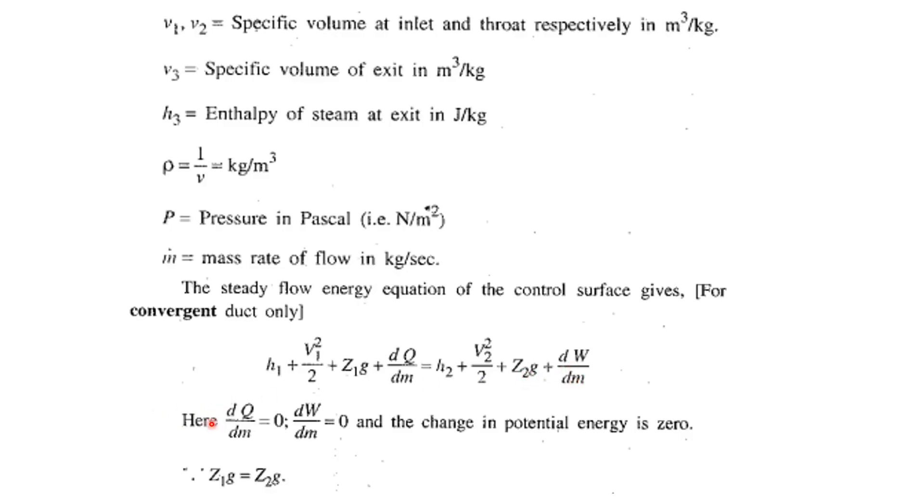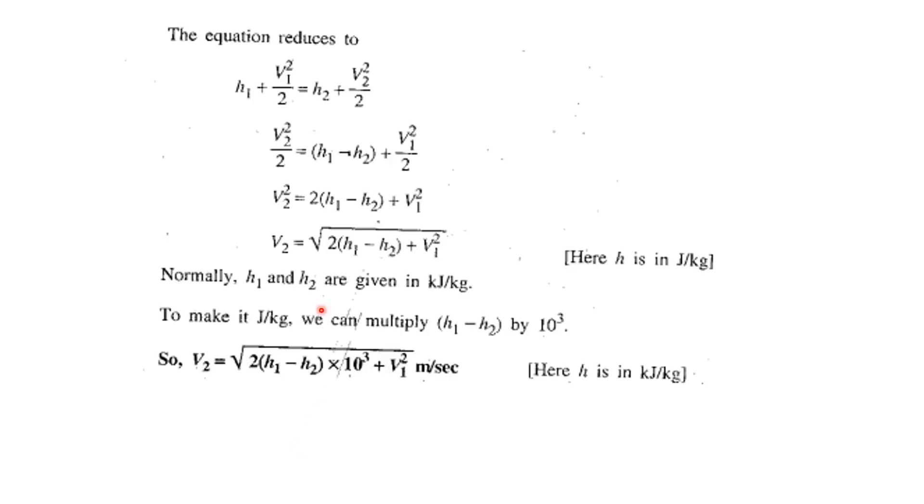Now here the heat transfer and the work transfer we already told is zero. Z₁ and Z₂ are also the same so those terms are eliminated. The equation reduces to h₁ + V₁²/2 = h₂ + V₂²/2.